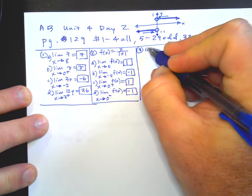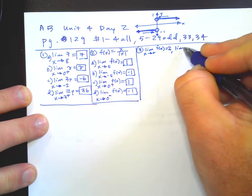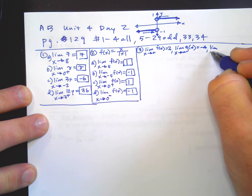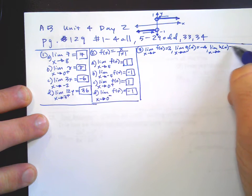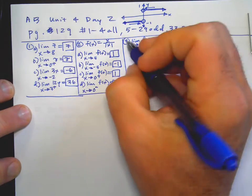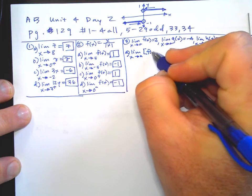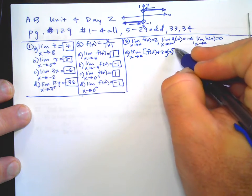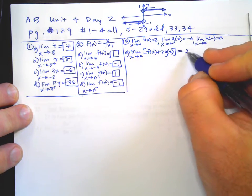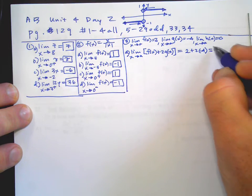Number three — they give you a bunch of stuff. They say given that the limit as X approaches A of F of X equals two, and the limit as X approaches A of G of X equals negative four, and the limit as X approaches A of H of X equals zero, find the limits that exist. Part A: the limit as X approaches A of F of X plus 2G of X. Using limit properties, this one's going to be two plus two times negative four, and you're going to get negative six.